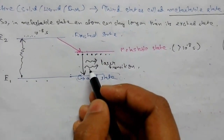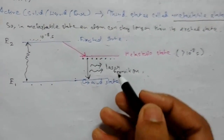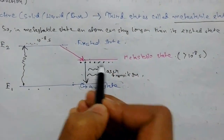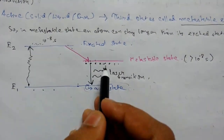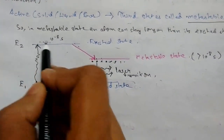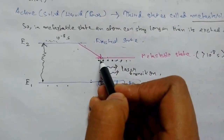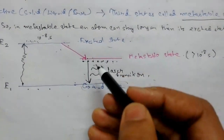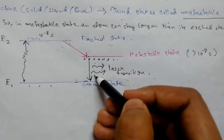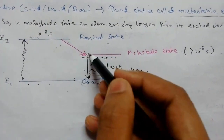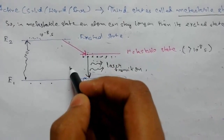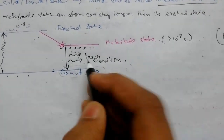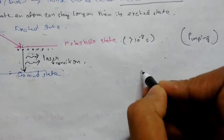Once population inversion is achieved, a photon is obtained by spontaneous emission and is made to strike the atoms in the metastable state. Spontaneous emission takes place continuously — atoms remain in the metastable state and spontaneous emission strikes those atoms. The excited atom in the metastable state is then stimulated to emit a photon of the same energy as the stimulating photon. The stimulating and stimulated photons passing through the atoms of the metastable state yield a large number of coherent photons by repeated stimulated emission.